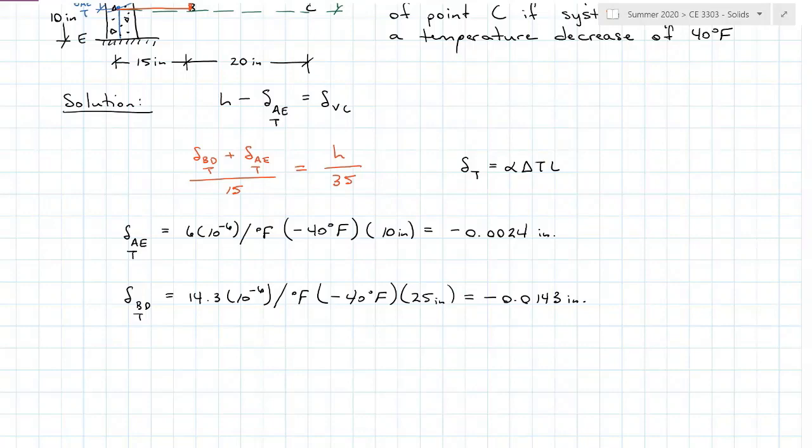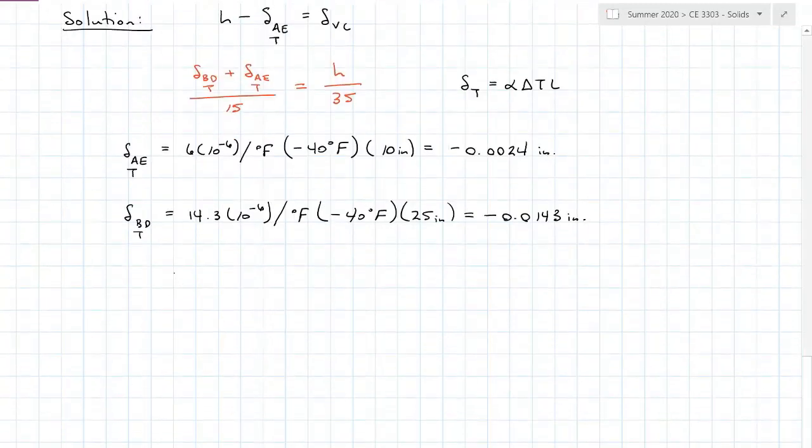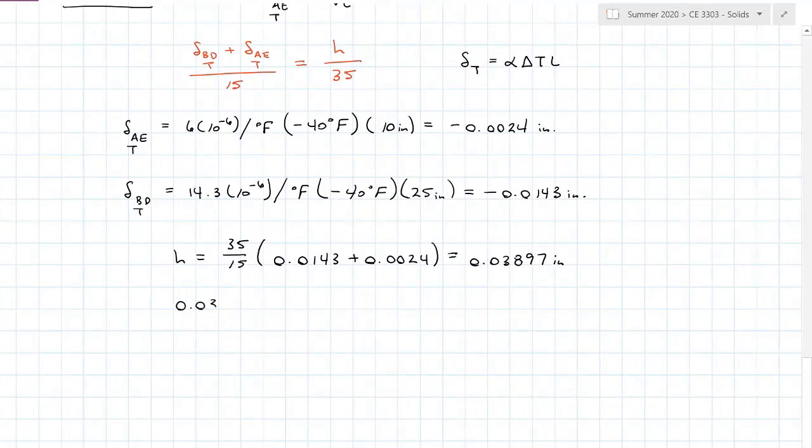Now I've already taken contractions into consideration when I drew my triangles, so all I have to do is plug in magnitudes to the equations I've created. My height is going to be 35 over 15 times 0.0143 plus 0.0024, which gives me 0.03897 inches. Then plugging that into my first equation for the vertical deviation of point C, I have 0.03897 minus 0.0024.